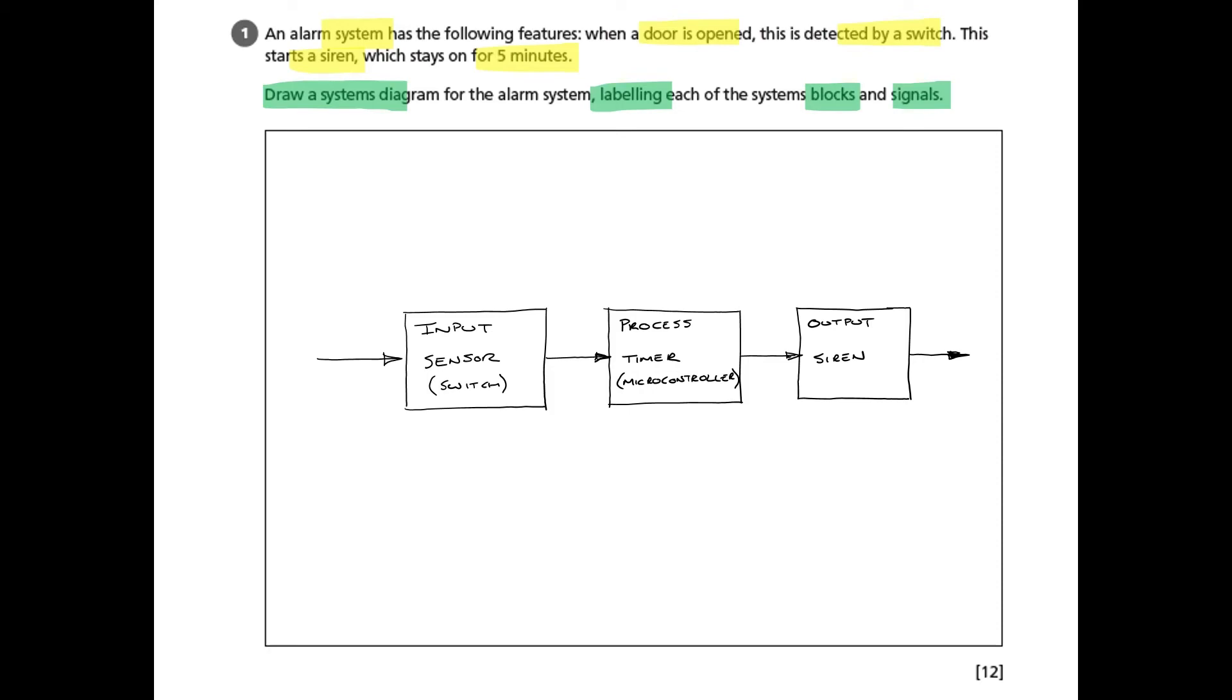And then the final block is the output, which in this particular case is the siren. So we've got our three blocks - the input, process, and the output - and they're in sequence. What we're now going to do is move on to describing the signals.